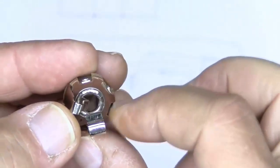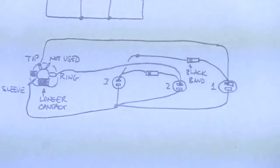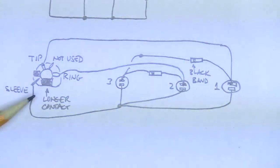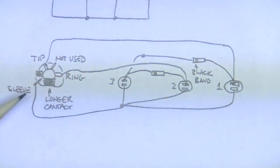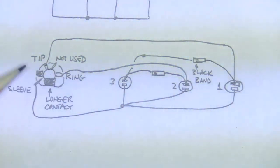And it has four lugs that you can connect the wire to: one, two, three, four. And as you see, I've shown one, two, three, four. The one between the short and the longer contact is the sleeve. The next one is the tip. The next one is not used in this application. And the last one is the ring.